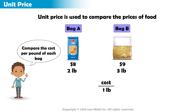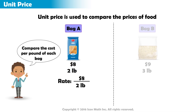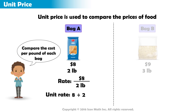The cost per 1 pound is a unit rate because the denominator is 1. Bag A costs $8 for 2 pounds, so the rate is 8 halves. To write this as a unit rate, we will divide the numerator, or top number, 8 by the denominator, or bottom number, 2. 8 divided by 2 equals 4, or 4 over 1. This means it costs $4 for every 1 pound.